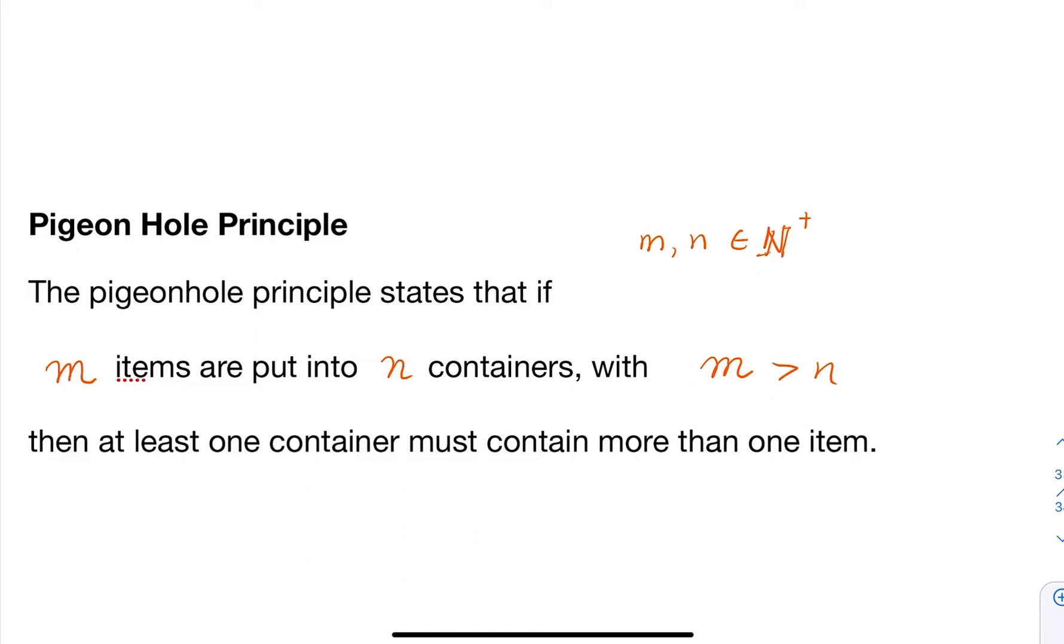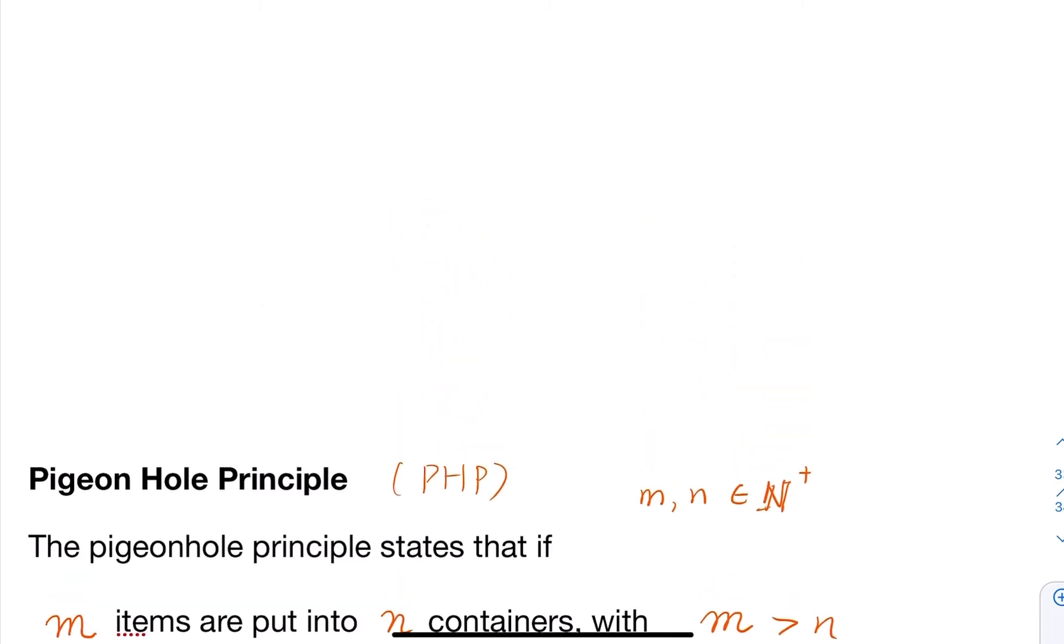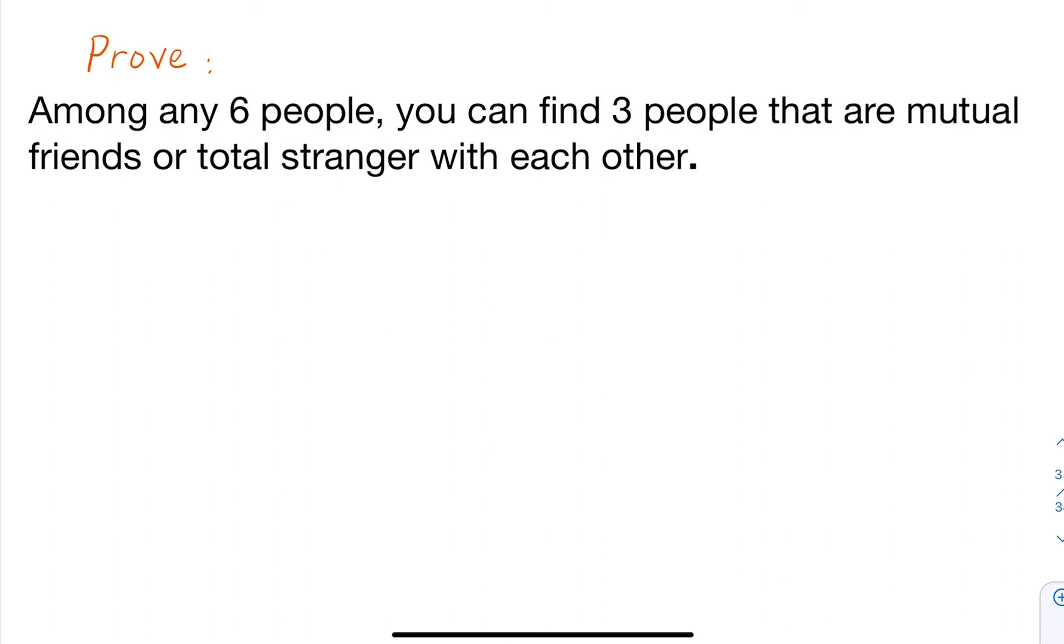So you try to put m items into n containers, but you have more items than containers. The Pigeonhole Principle, sometimes we say PHP for short, states that at least one container must contain more than one item. It turns out that the problem can be solved using PHP. Proof by PHP.